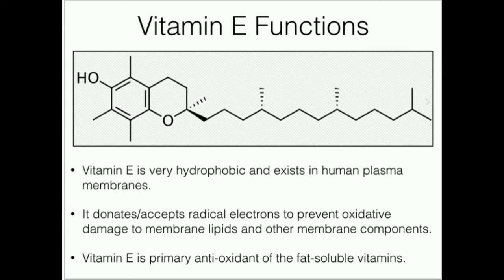The benefit of having vitamin E sandwiched in between the phospholipids is that free radicals will preferentially react with vitamin E instead of the polyunsaturated fats. Vitamin E is an antioxidant, but not in the same sense as something like vitamin C, which floats around in the blood or in the cell. Vitamin E is actually in the membrane. So not only does your blood and cytoplasm have their own free radical quenching system, but your membranes do also. Vitamin E sits in the membrane and donates or accepts radical electrons to prevent oxidative damage to membrane lipids and other membrane components, particularly polyunsaturated fatty acids.